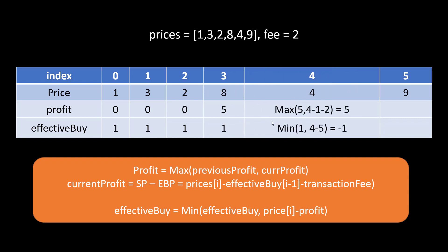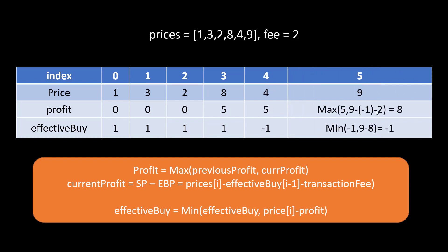When we move ahead, the maximum profit becomes the maximum of either the previous profit or the profit from selling at the current price. The effective buy price becomes the minimum of the previous buy price or buying at this value by using the profit accumulated so far, which is 5. So the minimum becomes minus 1 at this index. Moving ahead, the maximum profit becomes 8 because the effective buy price was minus 1 and selling at price 9 gives one more transaction, making the profit 8.